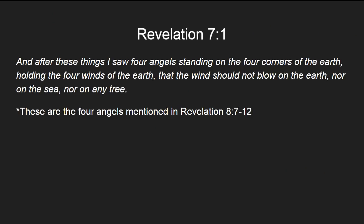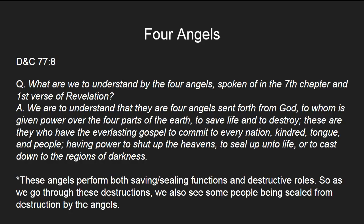In Revelation 7:1, we're introduced to the four angels. These four angels are also the ones mentioned in Revelation 8, verses 7 through 12. In D&C 77:8, Joseph Smith received the revelation that these four angels are sent forth from God, to whom is given power over the four parts of the earth, to save life and to destroy. These are they who have the everlasting gospel to commit to every nation, kindred, tongue, and people, having power to shut up the heavens, to seal up unto life, or to cast down to the regions of darkness.